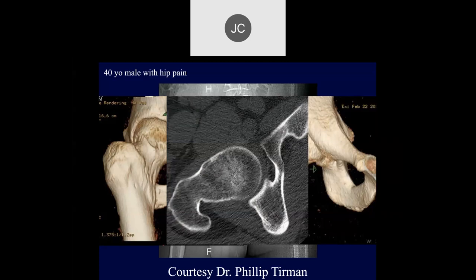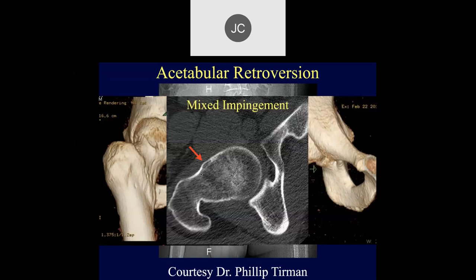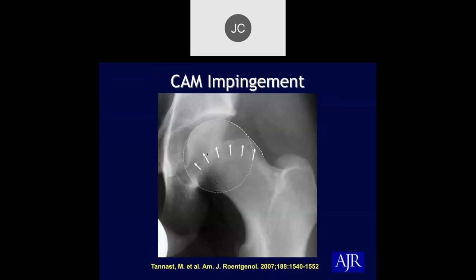On axial images we can see the anterior bump, typical of cam-type morphology. With a superior bump, the configuration of the head changes — it resembles the butt of a pistol with the barrel going inferiorly. This gives what's called the pistol grip deformity — hypertrophic bone superiorly involving the head-neck junction. Many pistol grip deformities can be due to old slipped capital femoral epiphysis, where hypertrophic bone forms at the healing site of the slip, making old SCFE one of the differentials and potential causes of cam-type impingement.